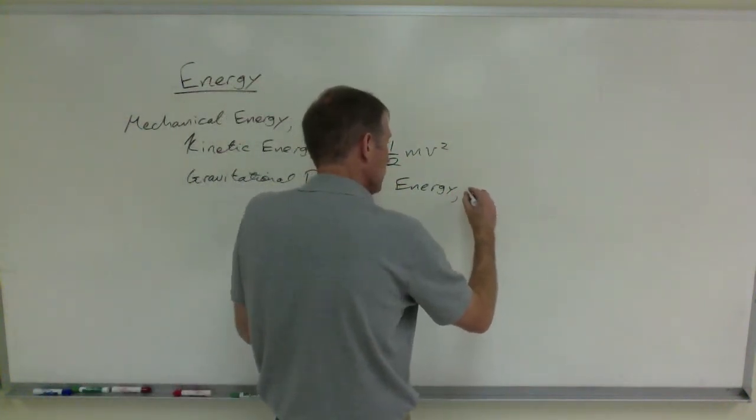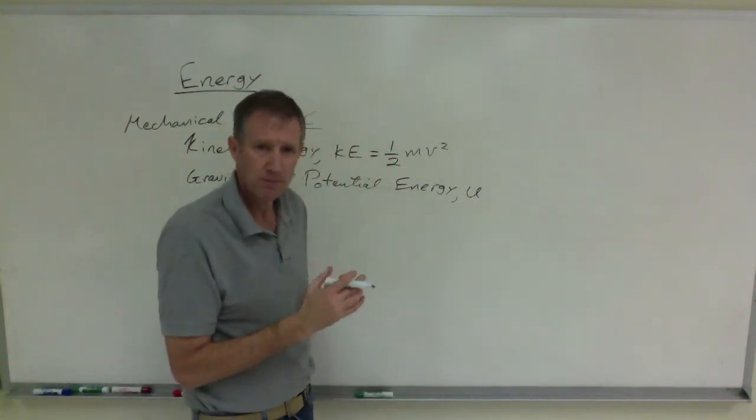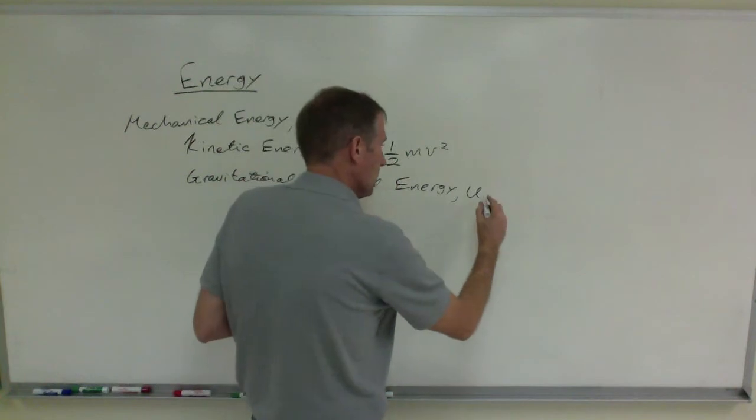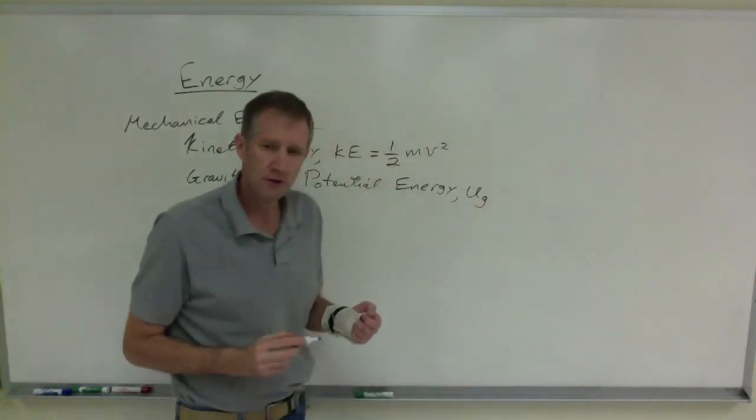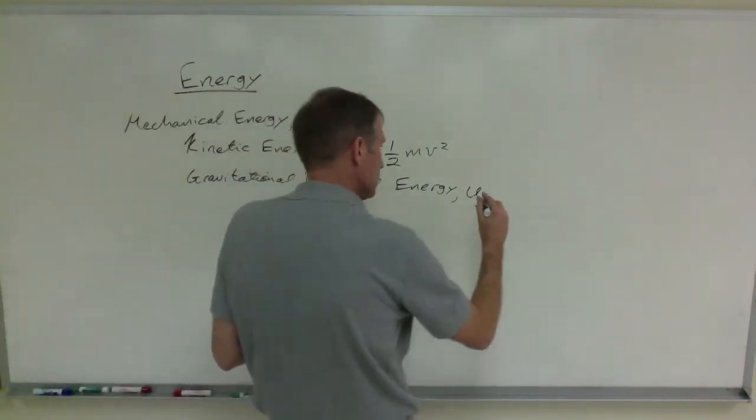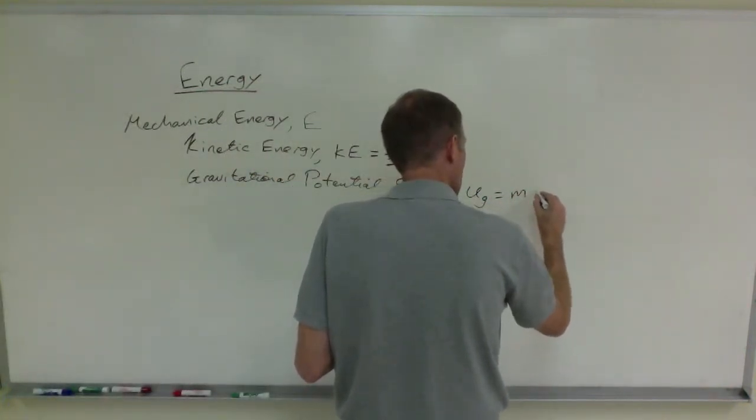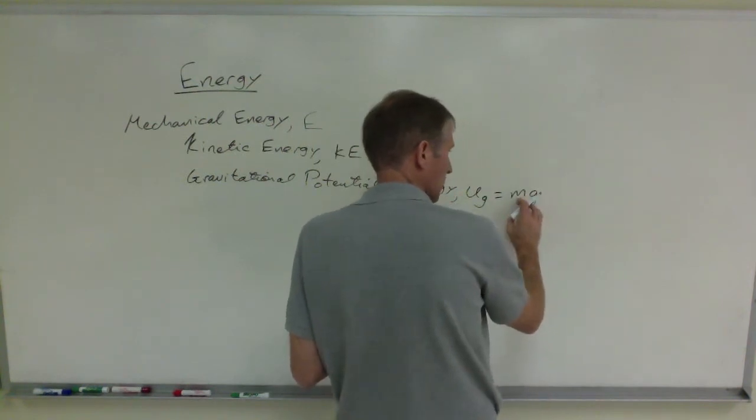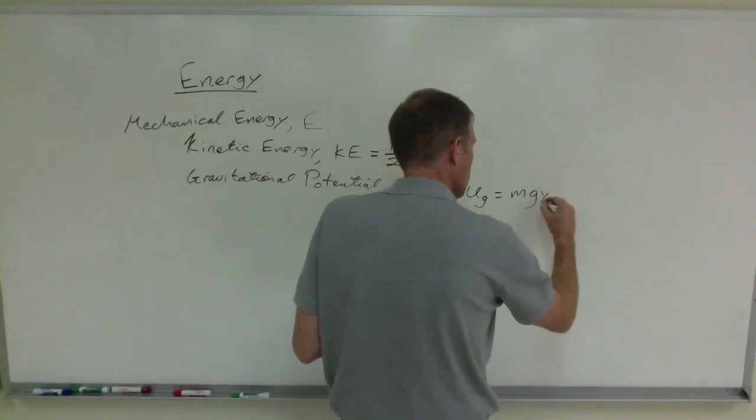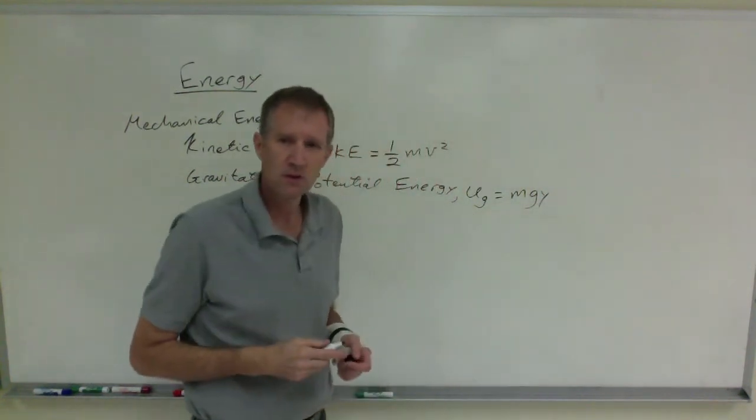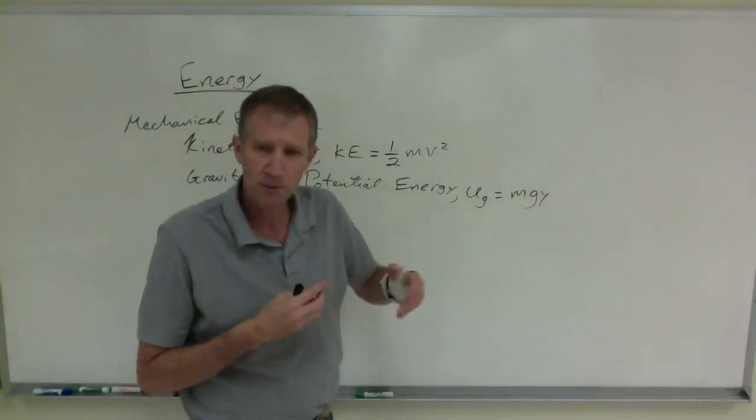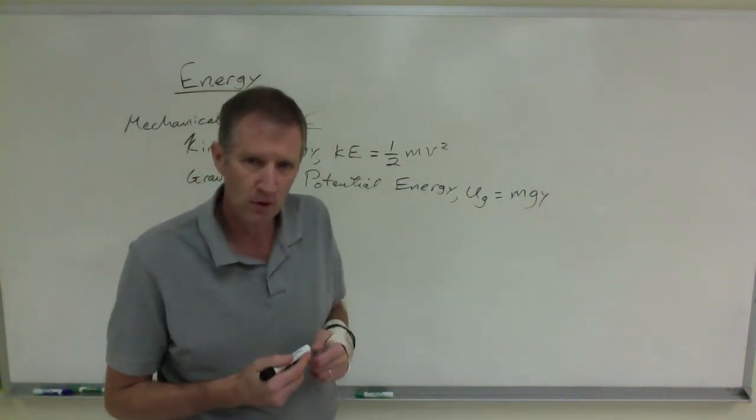The symbol is U. We tend to use U for potential energy. It varies, but I use a U. And then a subscript G, subscript G for gravity. And the equation is M times G, M for mass in kilograms, G, 9.8 meters per second squared here on earth, times Y. That's its vertical position in space. Some people use an H, M, G, H. I prefer a Y. It works out better in our equations.